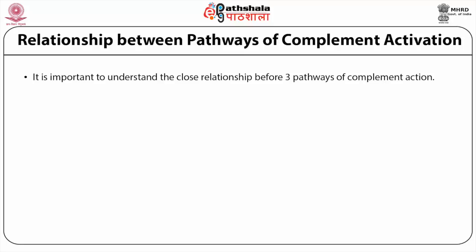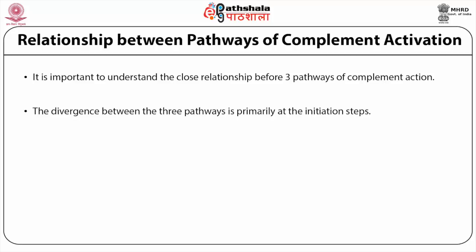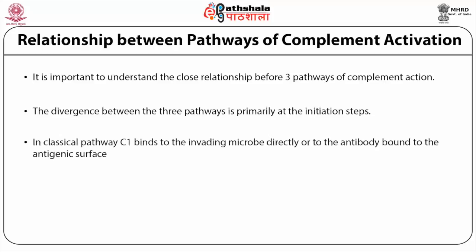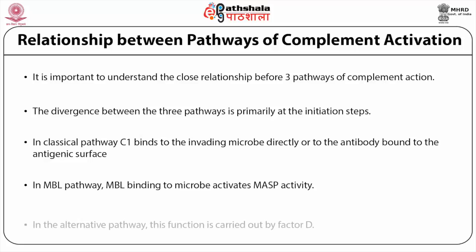It is important to understand the close relationship between the three pathways of complement action. The divergence between the three pathways is primarily at the initiation steps. In the classical pathway, C1 binds to the invading microbe directly, or C1 binds to antibody bound to the antigenic surface, which involves adaptive immunity. In the MBL pathway, MBL binding to the microbe activates MASP activity. In the alternative pathway, this function is carried out by factor D.